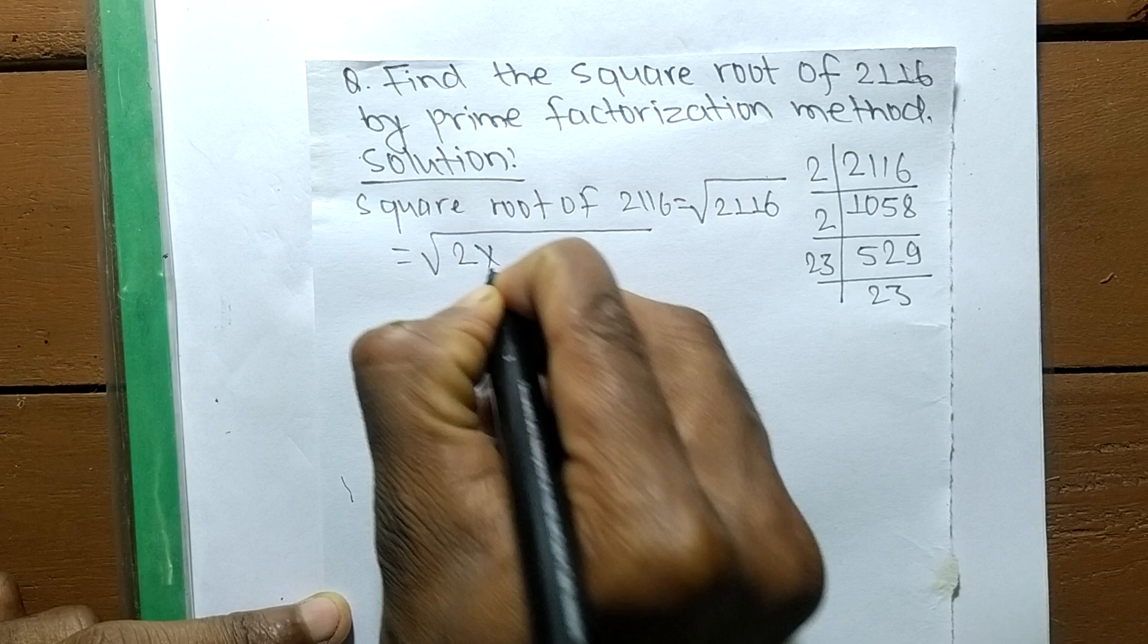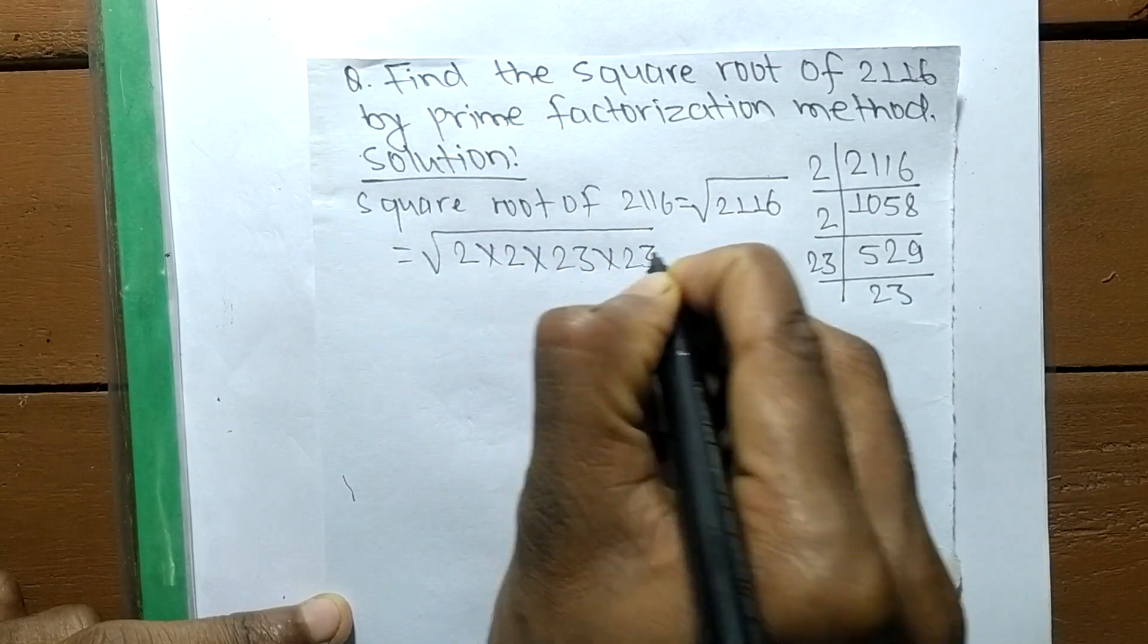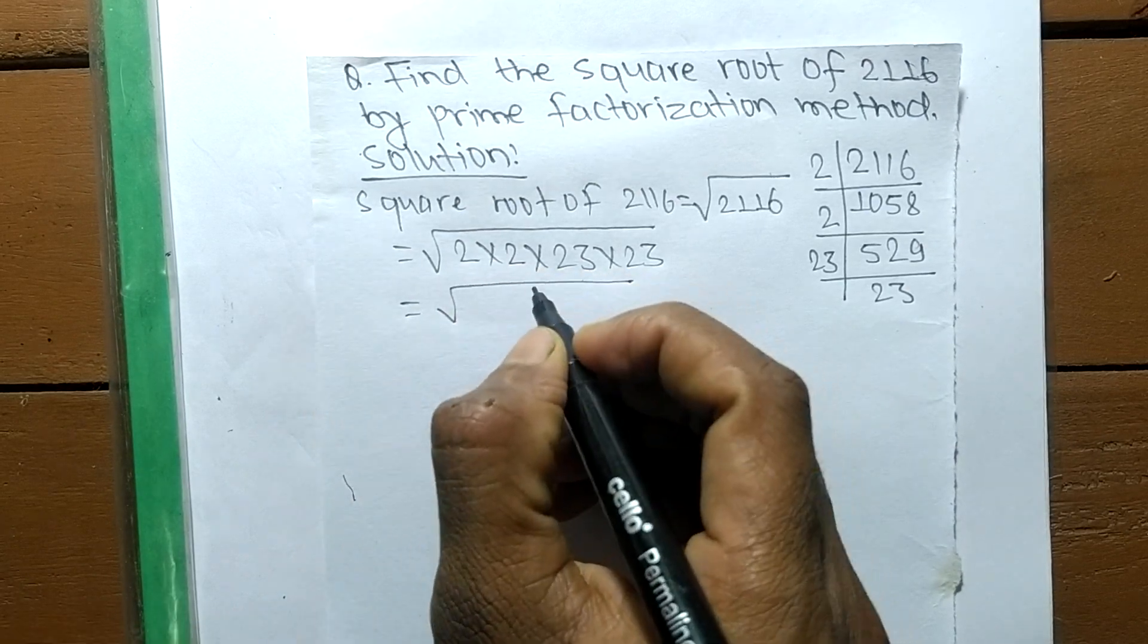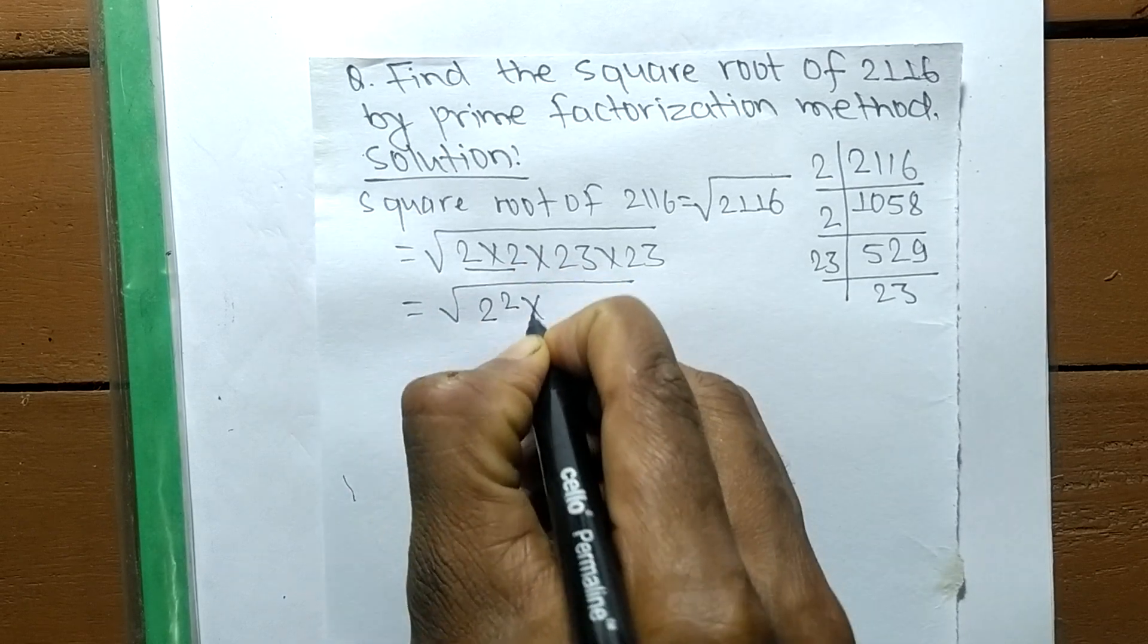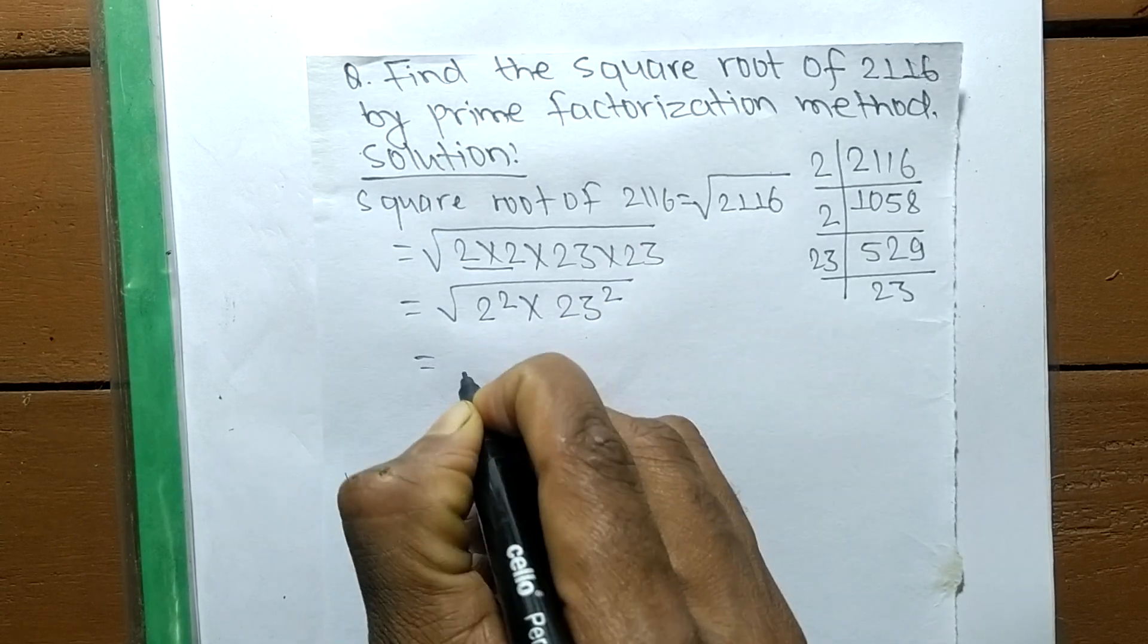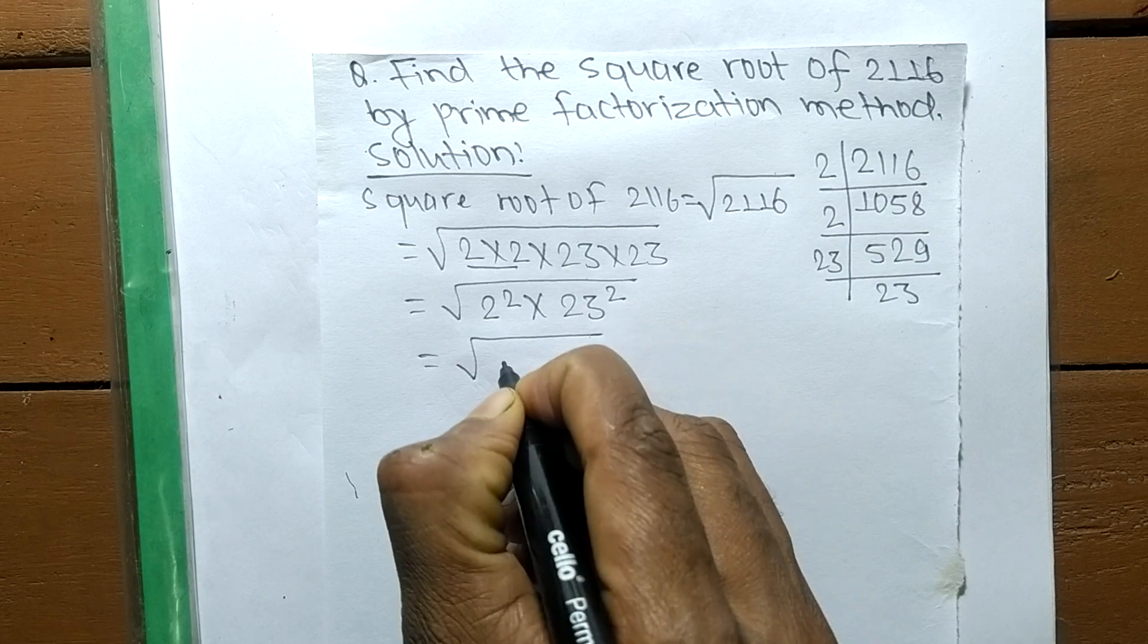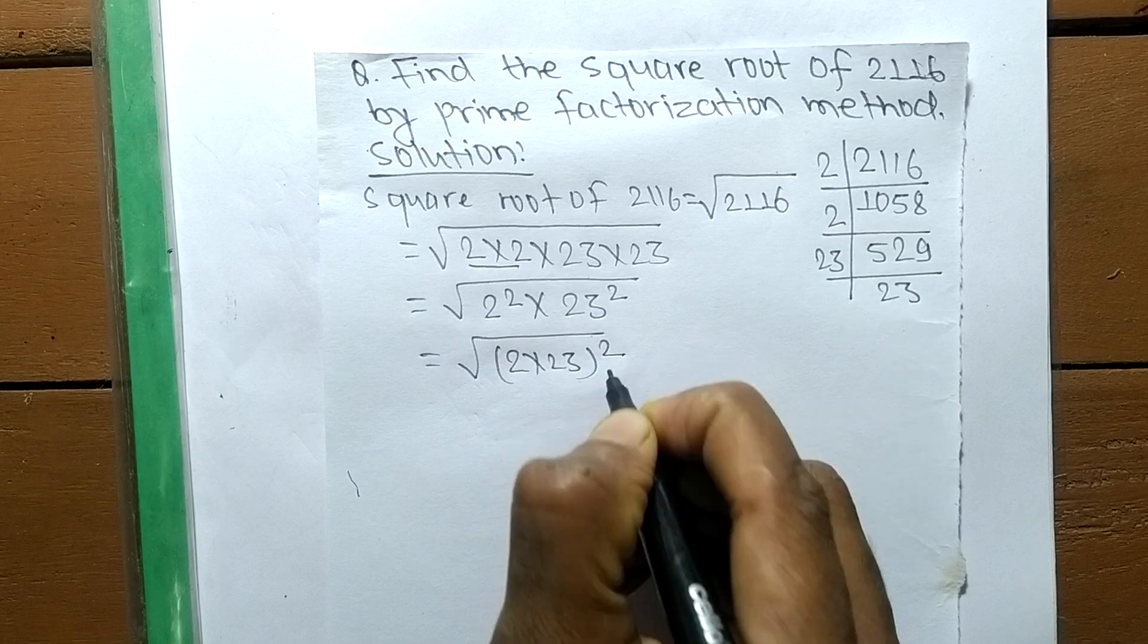It is 2 times 2 and 23 times 23. Now we have to make the square of these prime factors. 2 times 2 means it is 2 squared, and 23 times 23 means it is 23 squared. Since both numbers contain a square, we can write 2 into 23 whole squared.